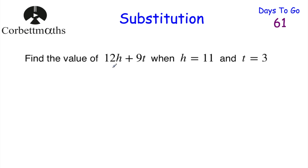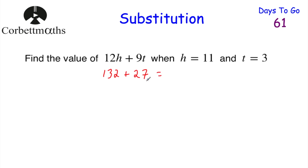The question says: find the value of 12h plus 9t if h equals 11 and t equals 3. So we've got 12h, which means 12 times h. h is equal to 11, so we're going to do 12 times 11, and 12 times 11 is 132. Then we've got plus 9t, which means 9 multiplied by t. t is equal to 3, so 9 times 3 equals 27. So we've got 132 plus 27.